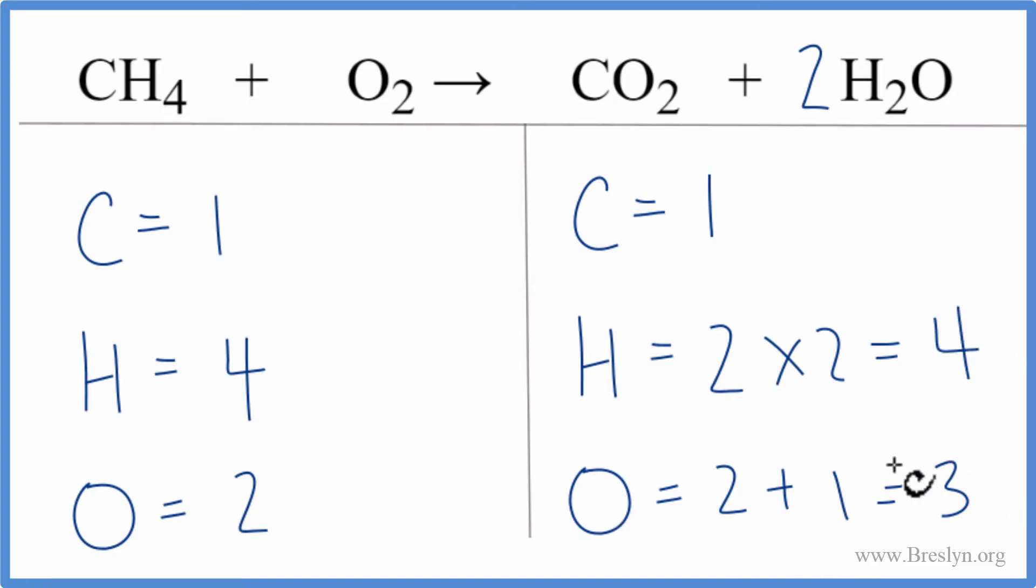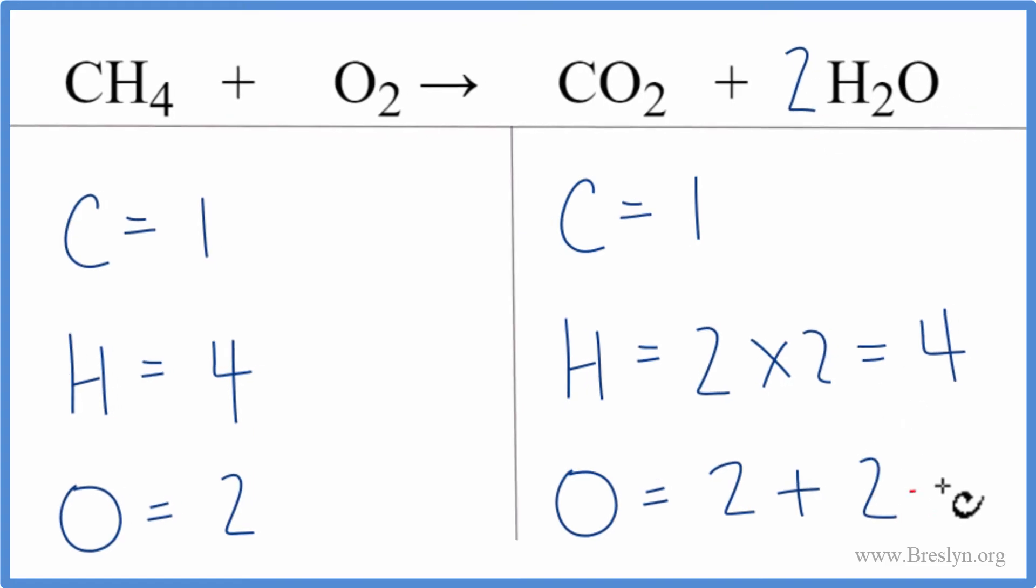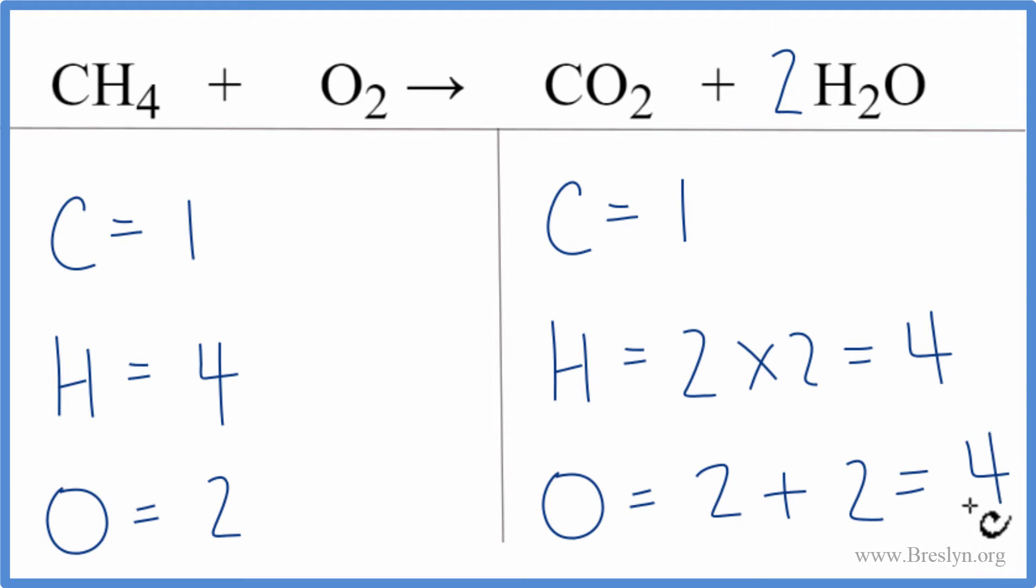And now we need to change these numbers here to reflect what we have up in the equation. 2 is our subscript here, so we have 2 oxygen atoms. Plus, we have 1 as our subscript times the coefficient 2. So 1 times 2, that's 2. And now we have 4 oxygen atoms. But our hydrogen atoms, those are the same.